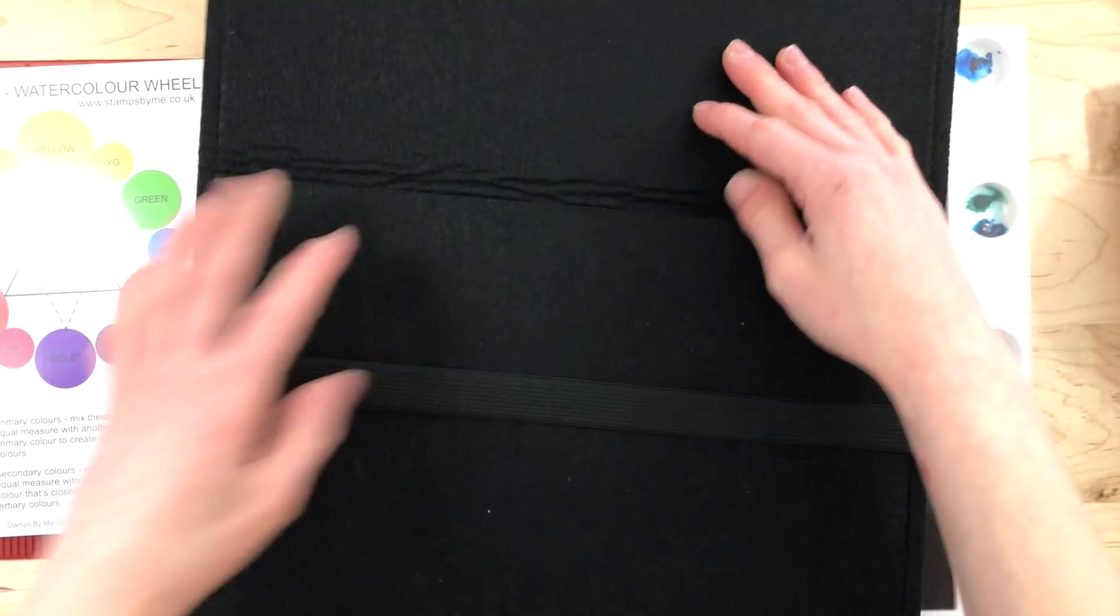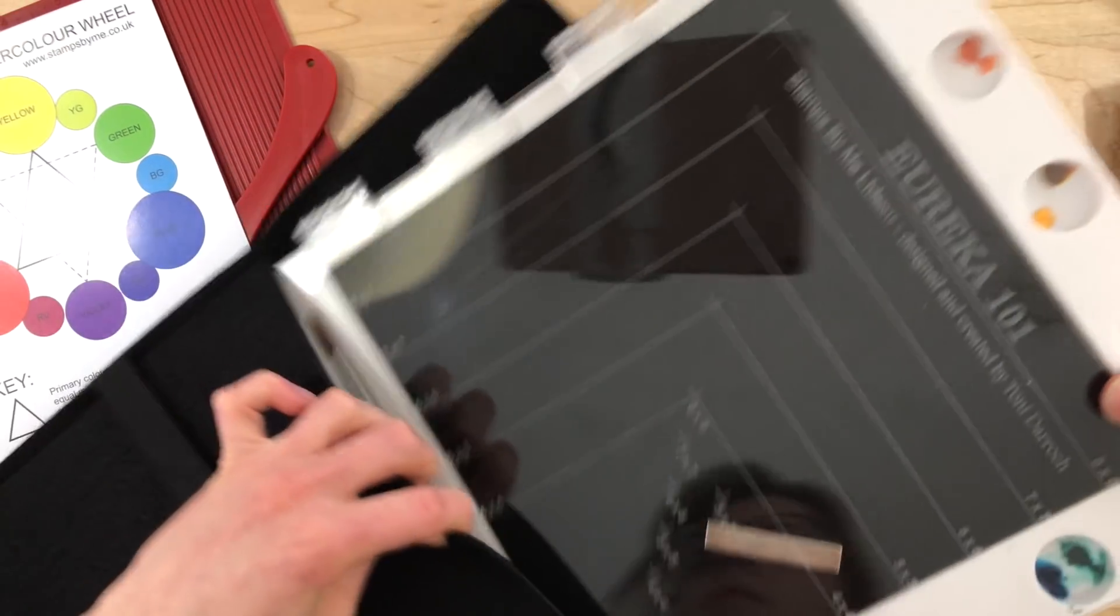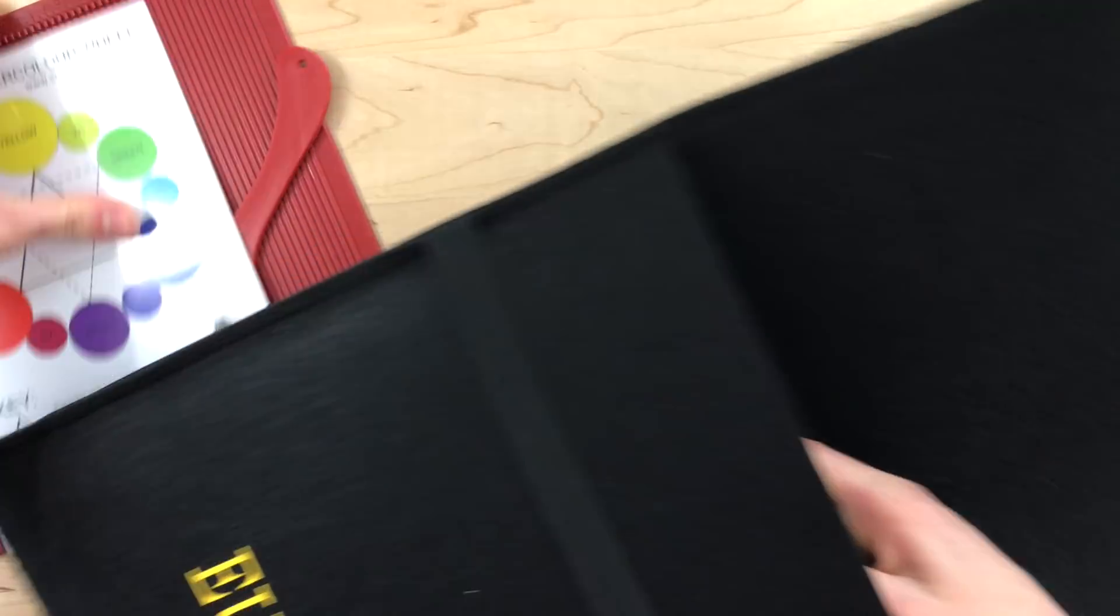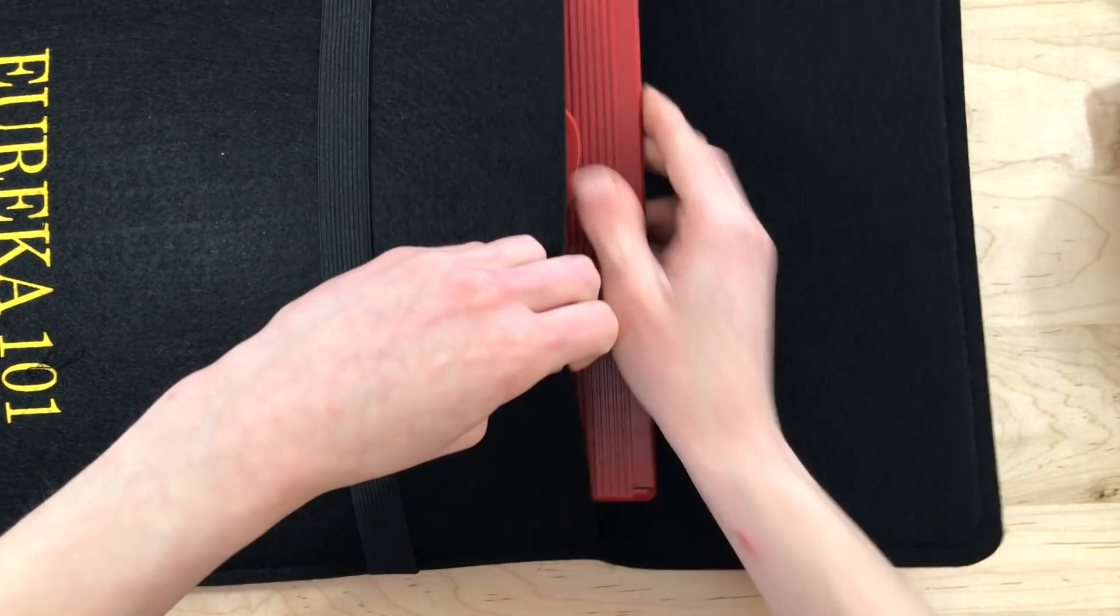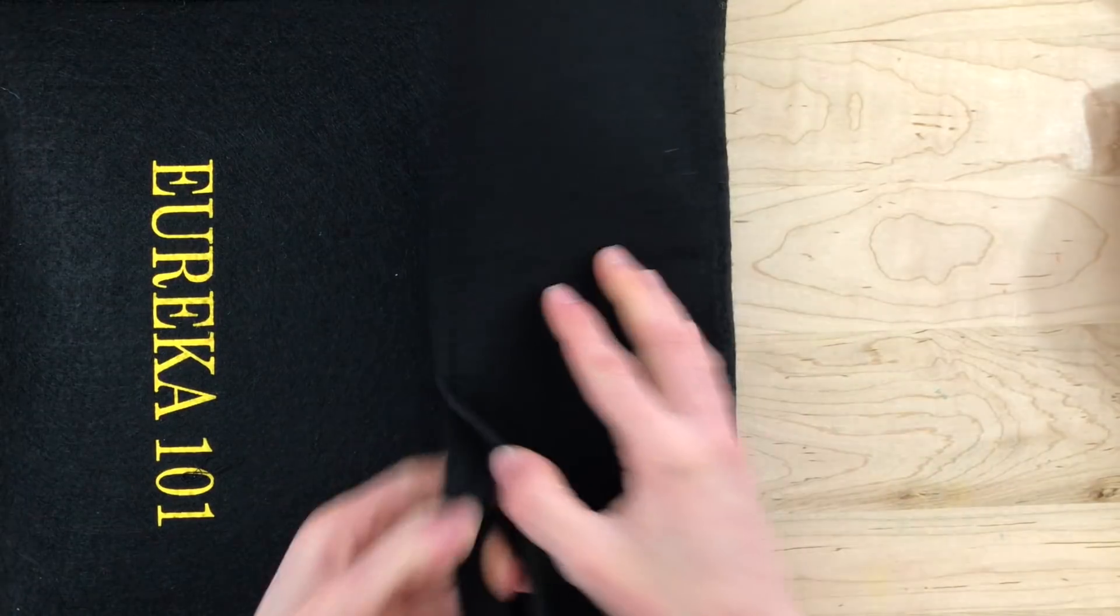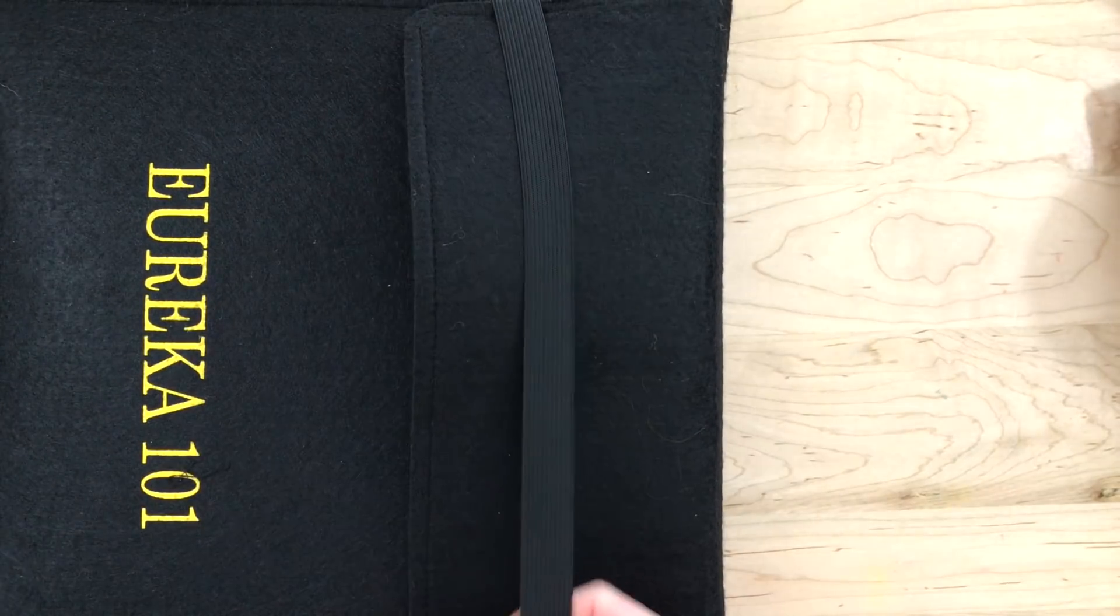And then everything fits inside of this convenient sleeve that also is included with your Eureka board. The board can slide right in, and you can keep all of your watercolors and everything continually inside of those mixing chambers. And you can stash all of the other supplies that come with your Eureka board in there as well.